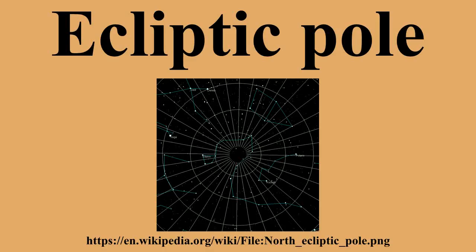By definition, the ecliptic poles are located 90 degrees from the Sun's position. Therefore, whenever either ecliptic pole is at the zenith, the Sun must be on the horizon. Ecliptic poles can be at the zenith at the Arctic and Antarctic circles.